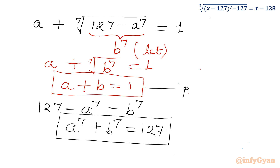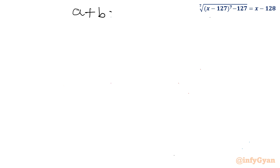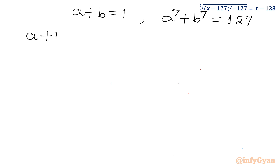Now we have to solve this system. Let us write the equations: equation 1 is a plus b equal to 1, and equation 2 is a power 7 plus b power 7 equal to 127. I will consider squaring equation 1: a plus b whole square equal to 1 whole square.